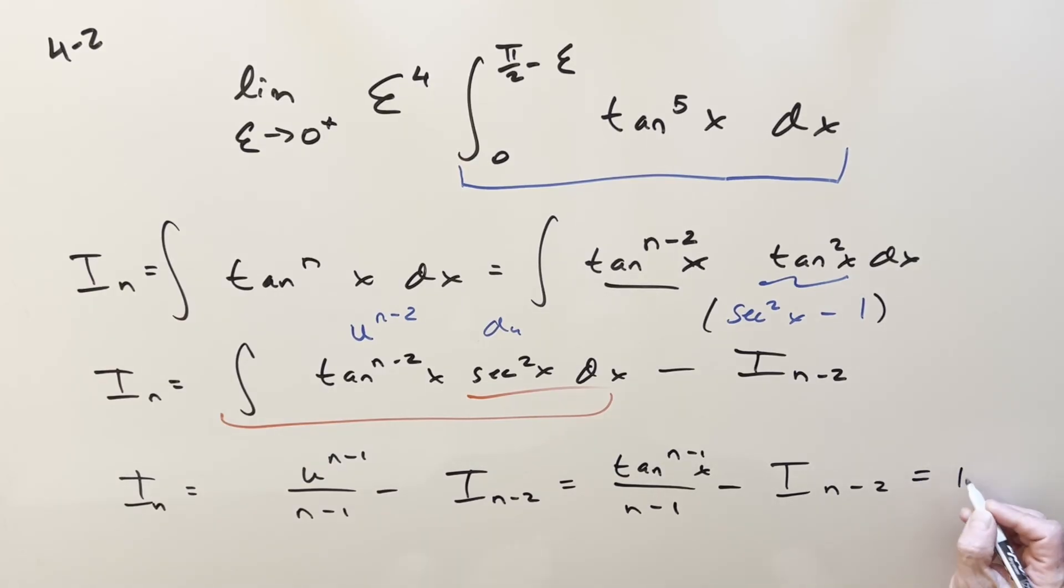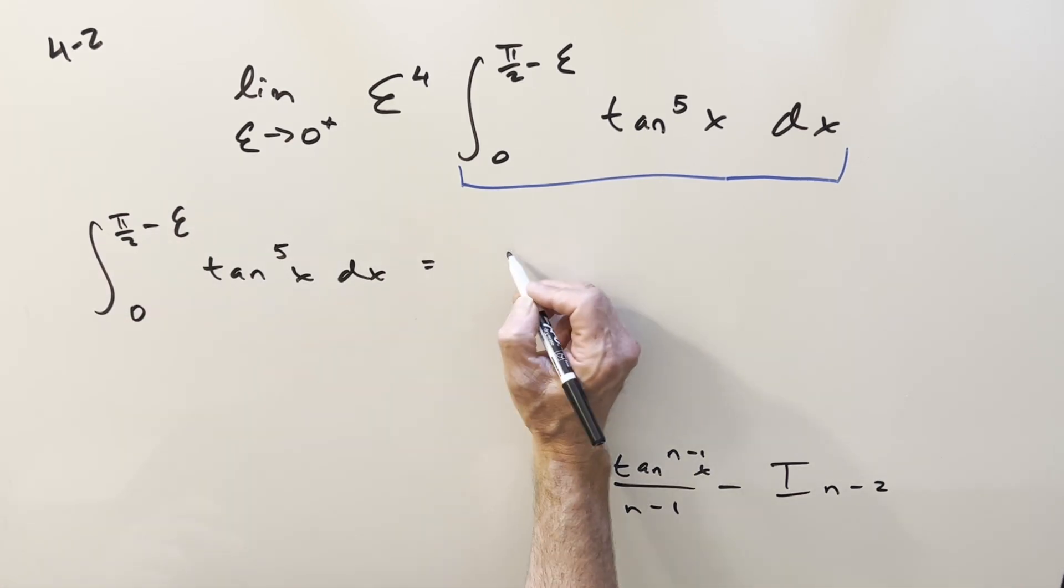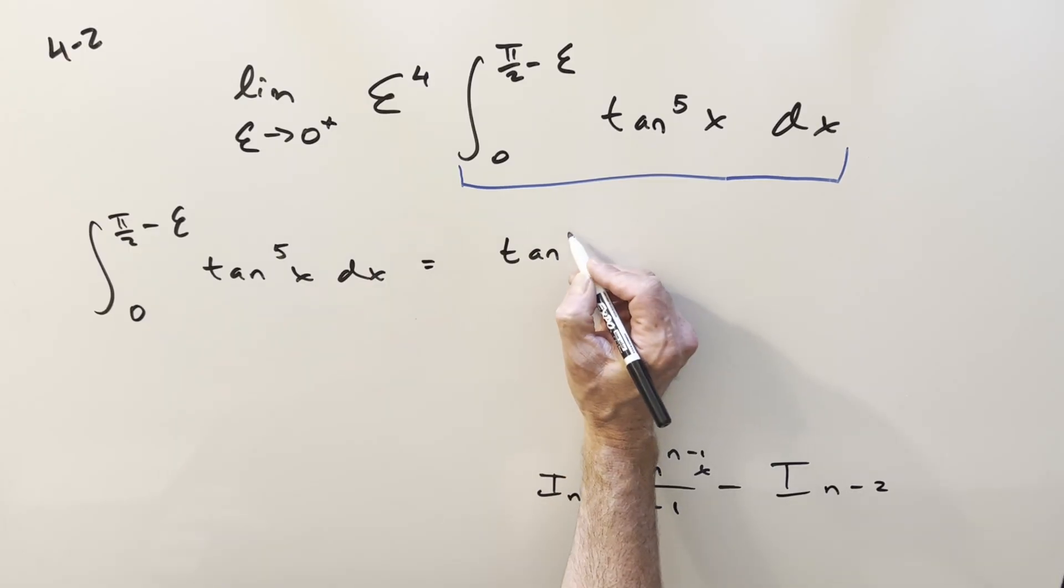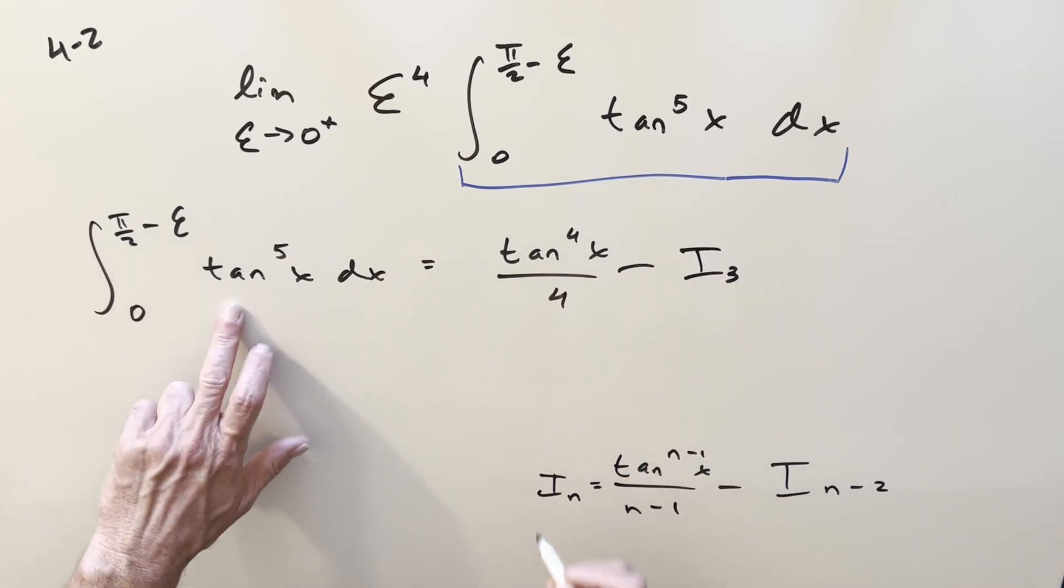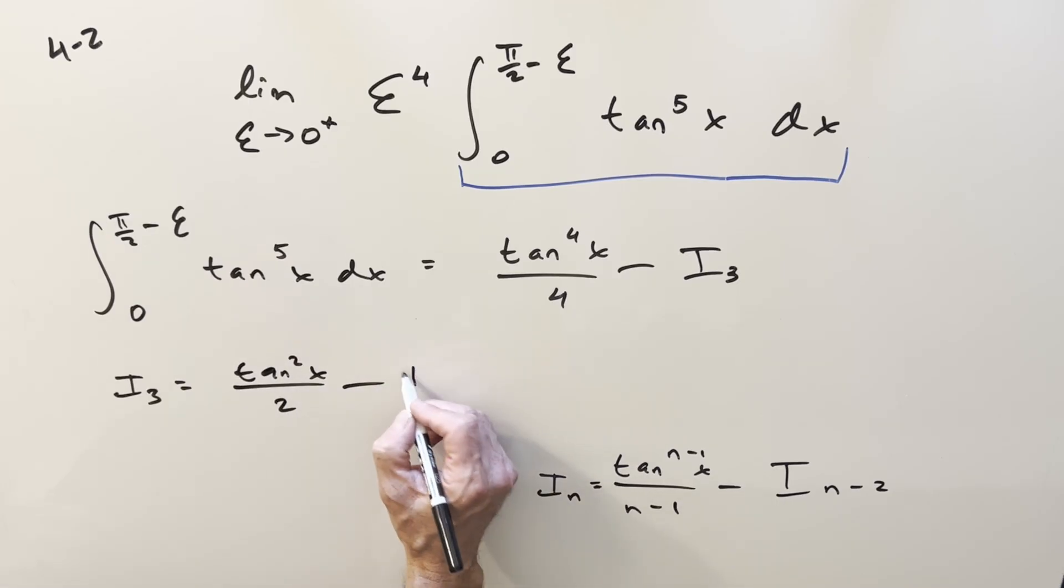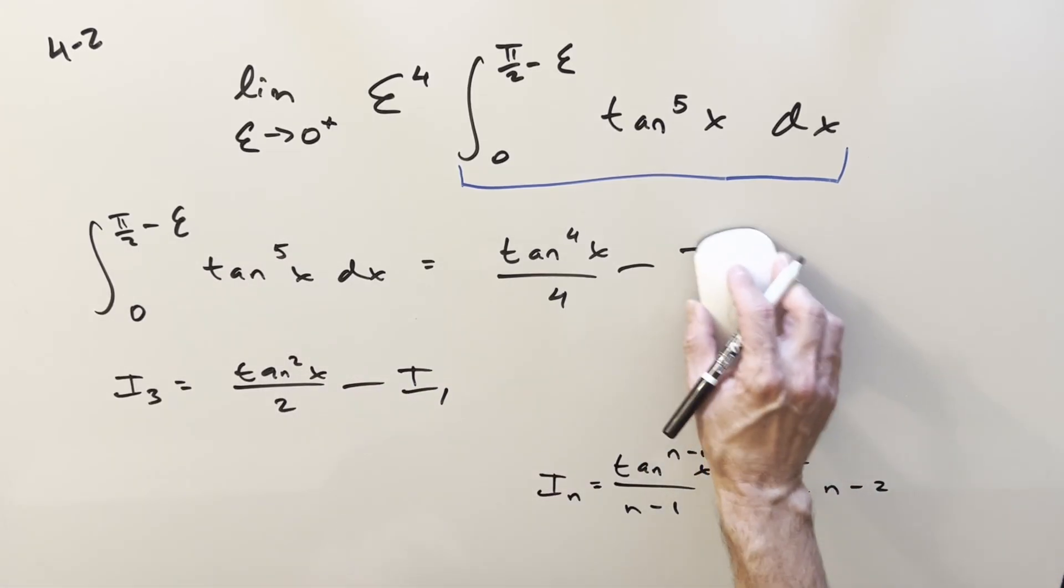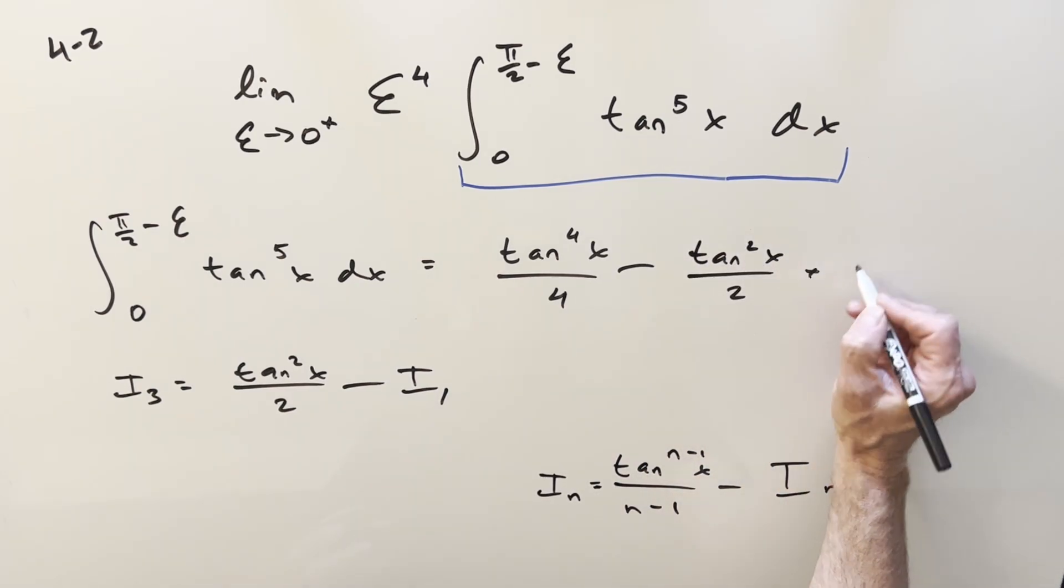So let's get a little space, and we can use this on our problem. So on the integral here, this is going to be like i sub 5. So reducing 5 by 1, the first part we're going to have is it's going to become tan 4x over 4, just reducing by 1, and then minus, this is going to become i sub 3, if this is i sub 5 reducing by 2. But then we just repeat the same thing for i sub 3 using this formula. It's going to be tan squared of x over 2 minus i sub 1.